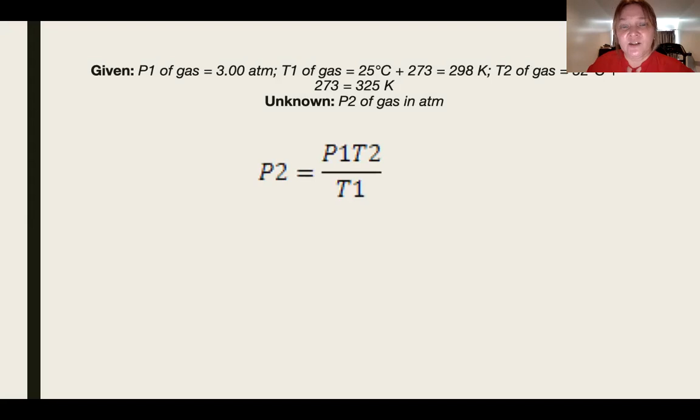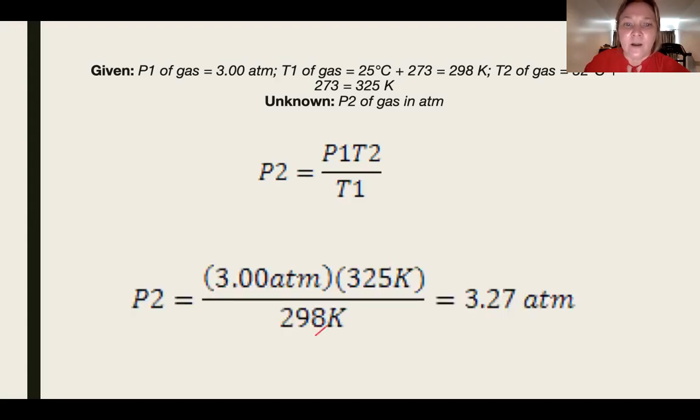So we rearrange the equation to solve for P2. So we get P1 T2 over T1. We plug in our numbers, we cut our units, and we get 3.27 atm.